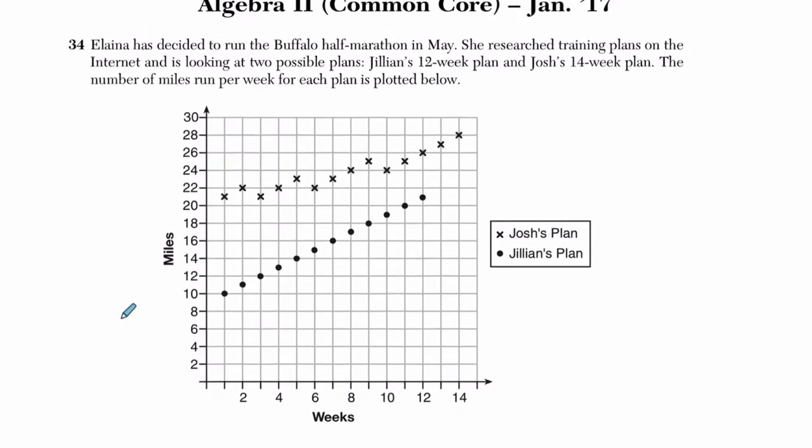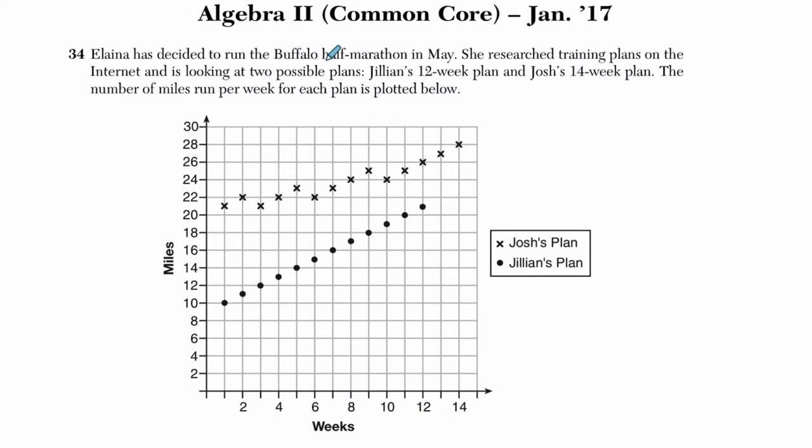Okay, so in this problem Elena has decided to run the Buffalo Half Marathon in May. She researched training plans on the internet and is looking at two possible plans: Jillian's 12-week plan, which is this one right here, and then Josh's plan, which is a little bit more all over the place. The number of miles run per week for each plan is plotted below. You've got weeks, you've got miles, alright.